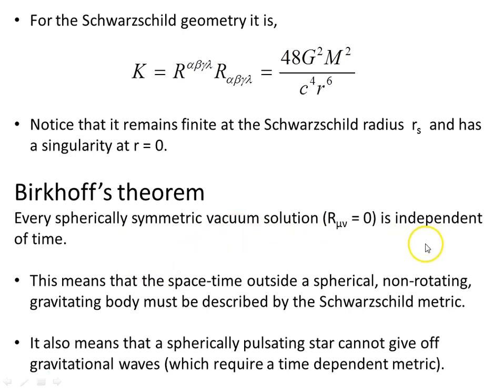This means that the spacetime outside a spherical non-rotating gravitating body must be described by the Schwarzschild metric. It also means that a spherically pulsating star cannot give off gravitational waves, which require a time-dependent metric outside the mass.